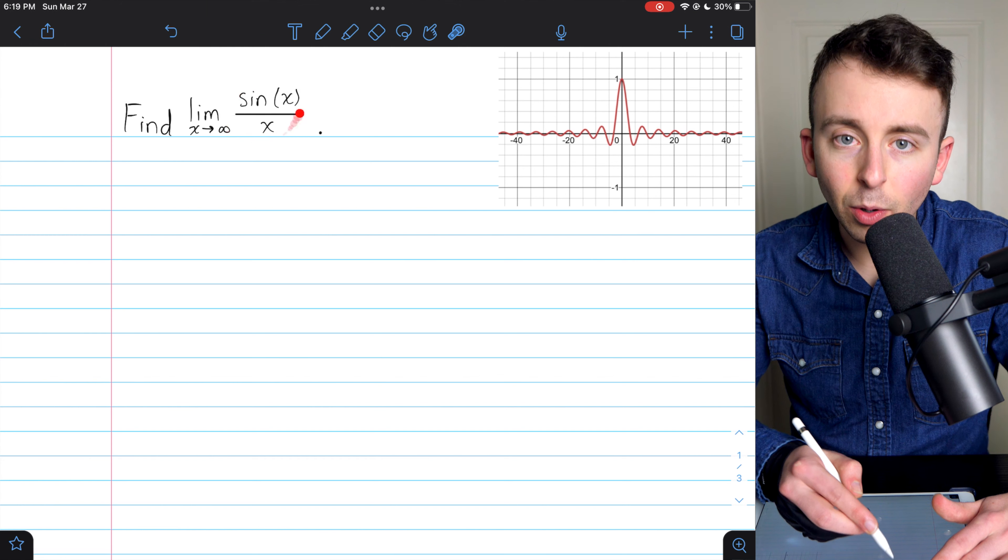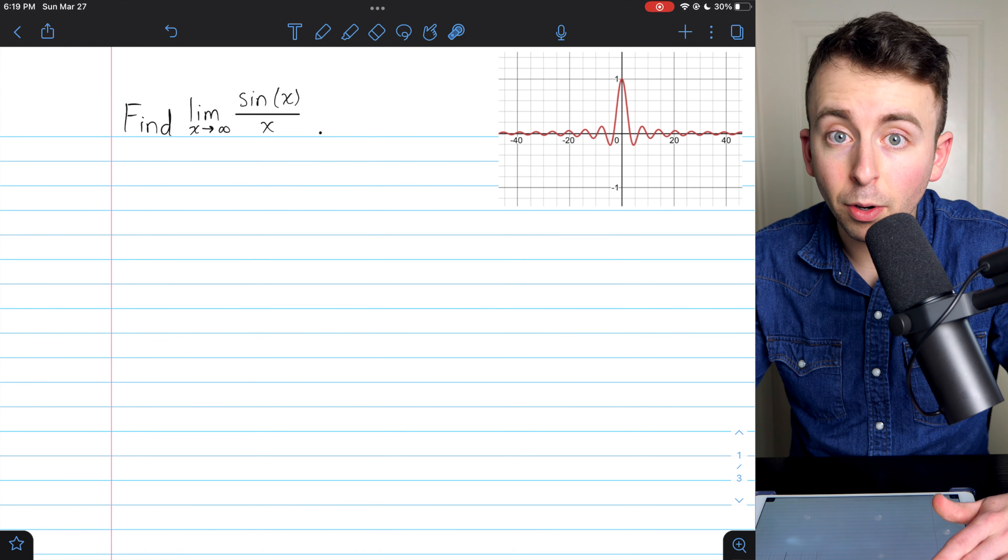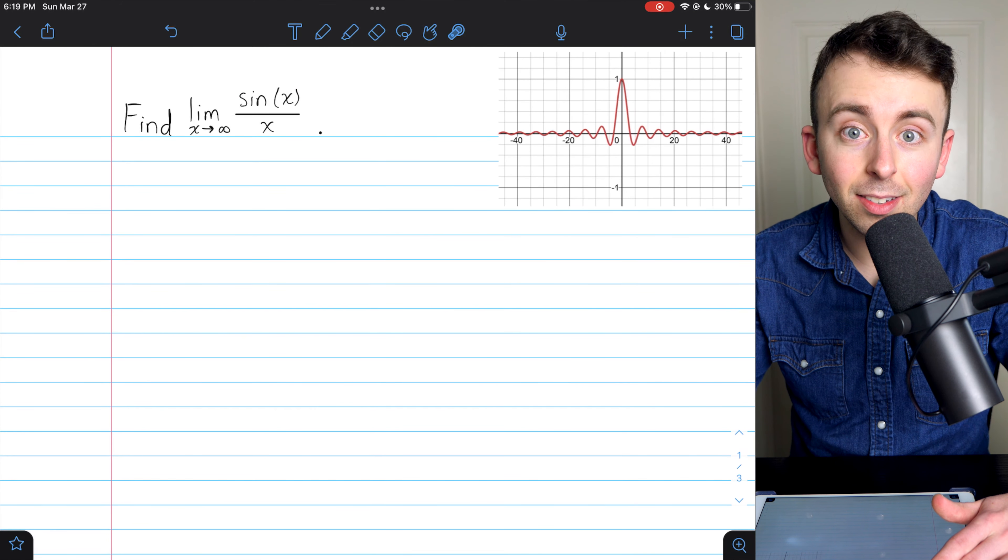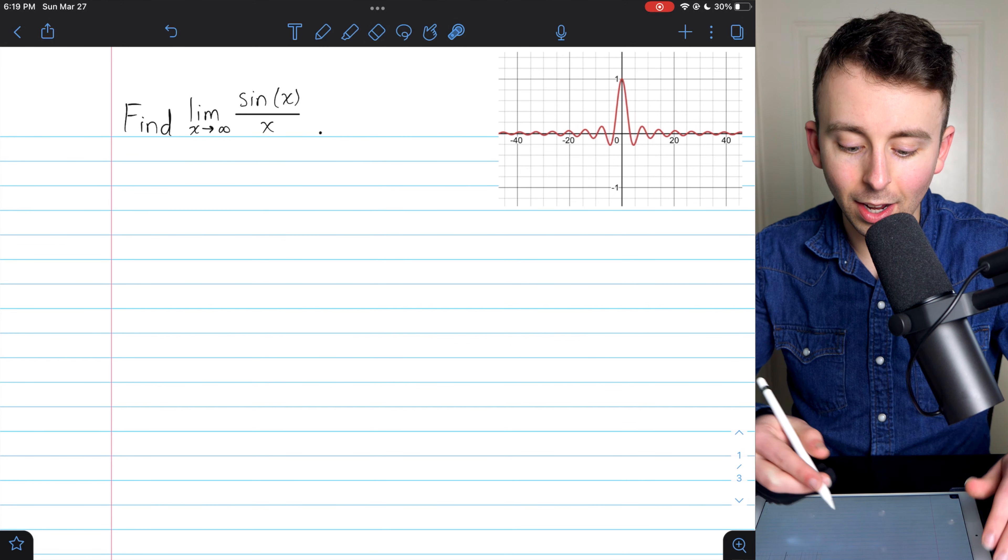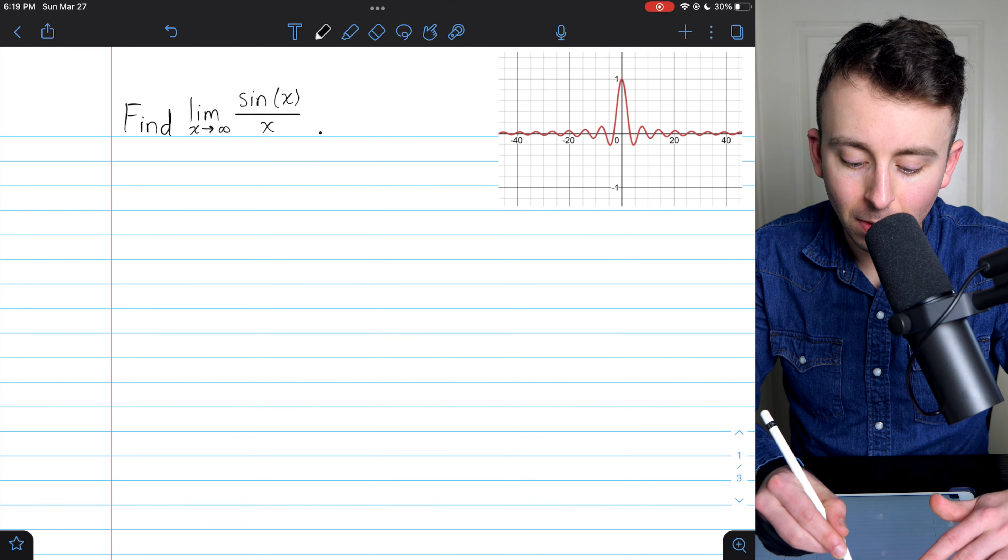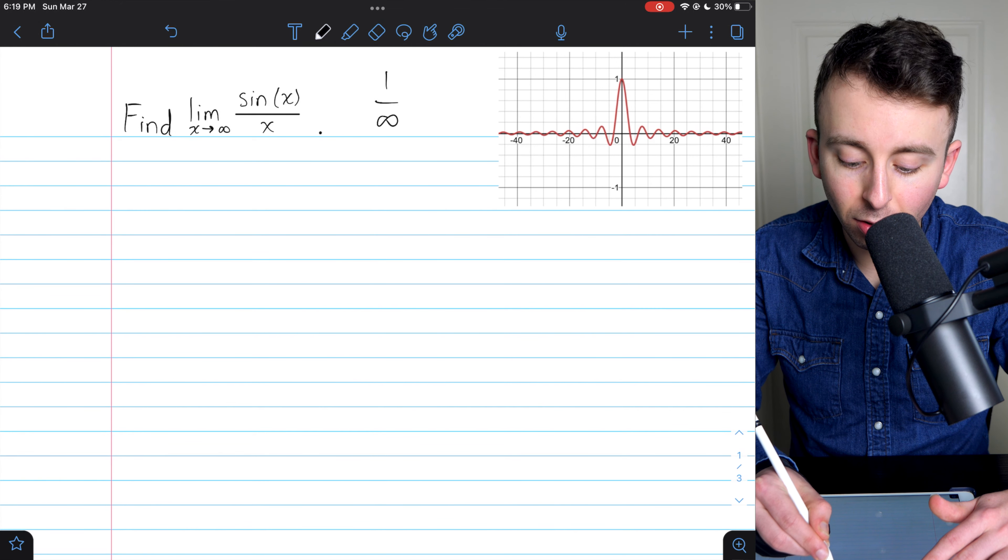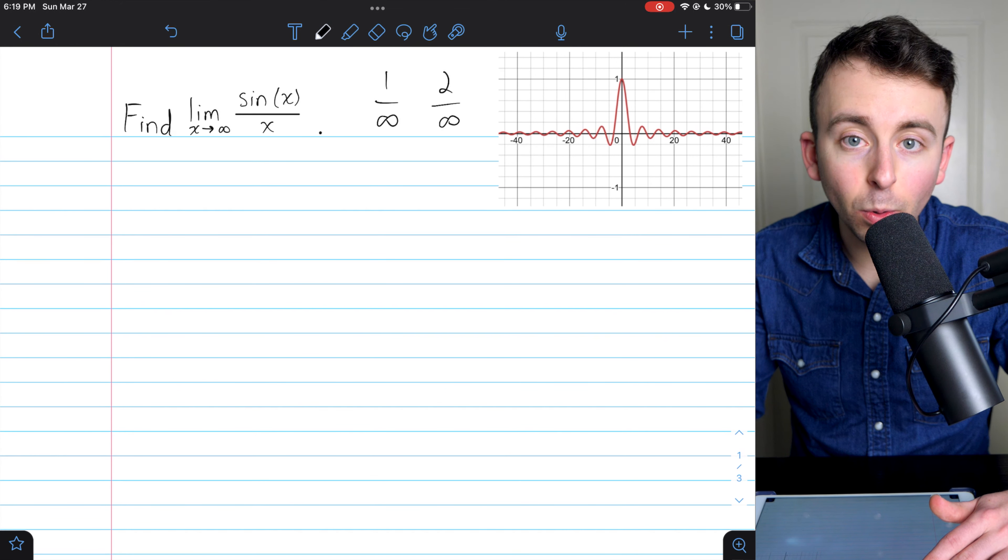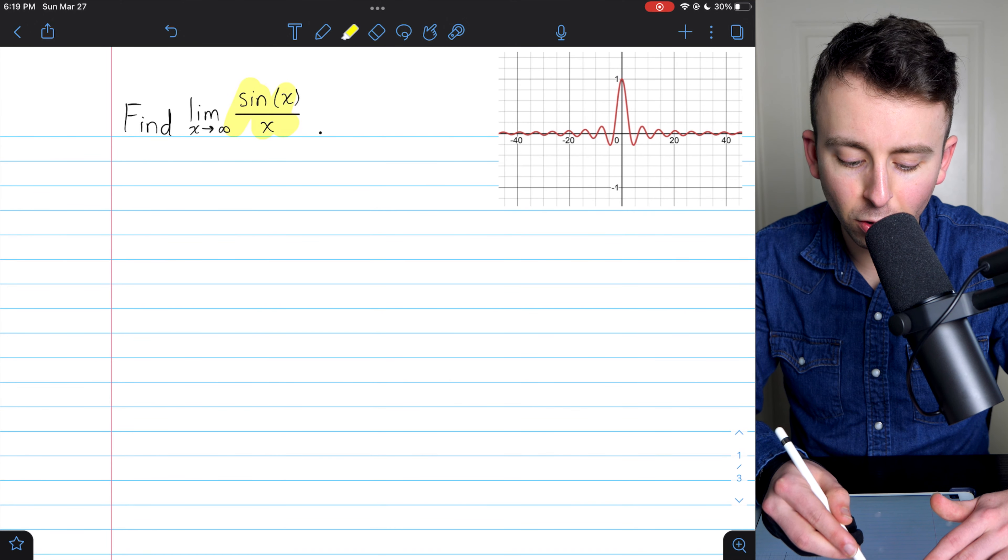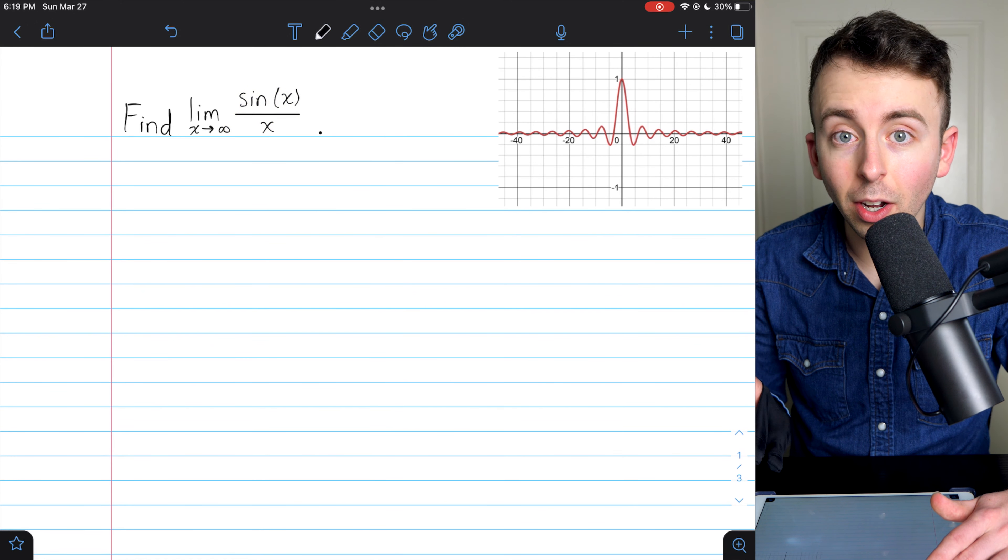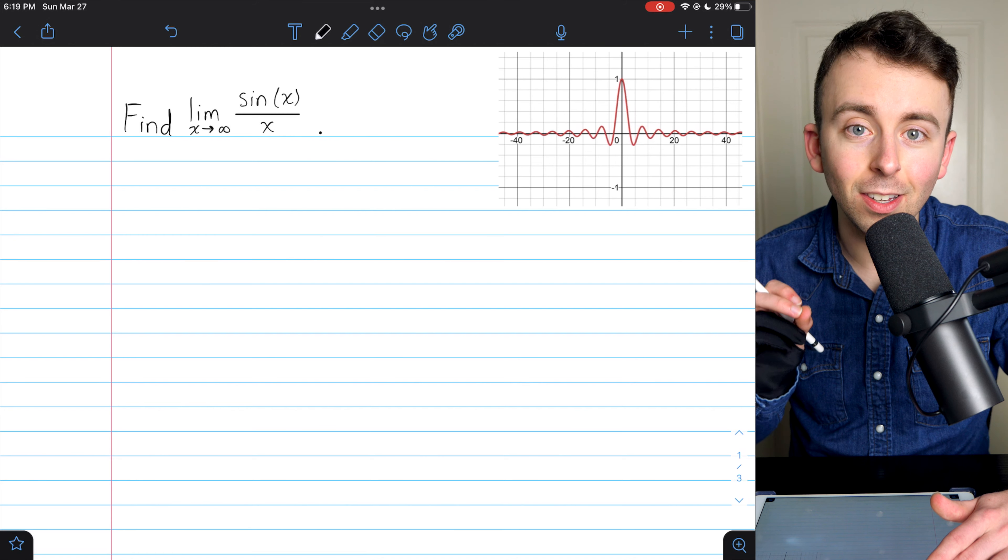Now, why would we suspect that we should use the squeeze theorem in the first place? Well, sine of x is already squeezed between negative 1 and 1, and any number divided by infinity, so to speak, is equal to 0. So it should be pretty easy to squeeze this function in between two other functions that will be approaching 0.